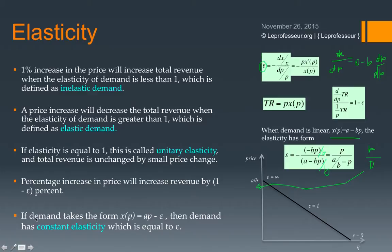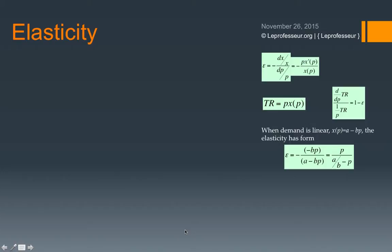Another interesting fact: if demand takes the form x(P) = A · P^(−epsilon), then demand will have constant elasticity equal to epsilon. If the demand function is of this power form with the elasticity appearing as the exponent, then elasticity remains constant at that value.